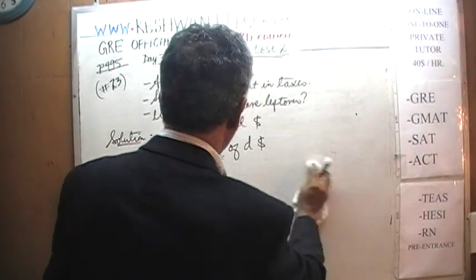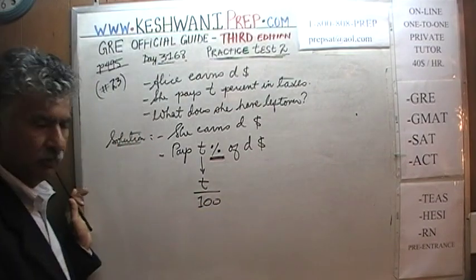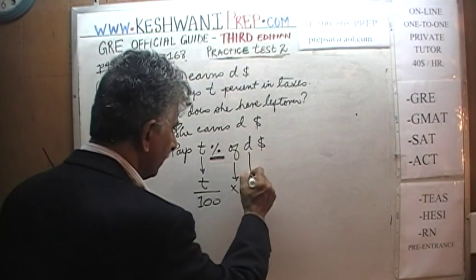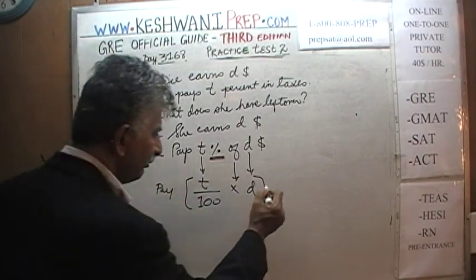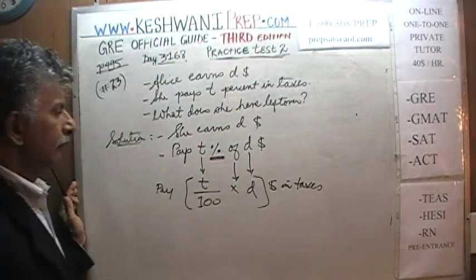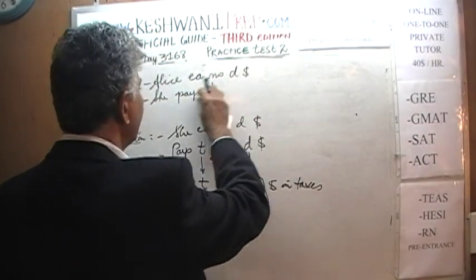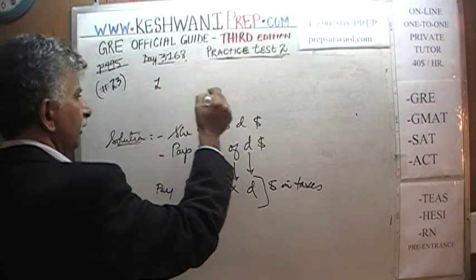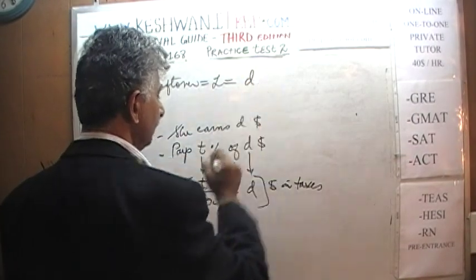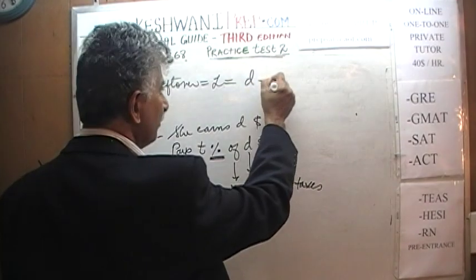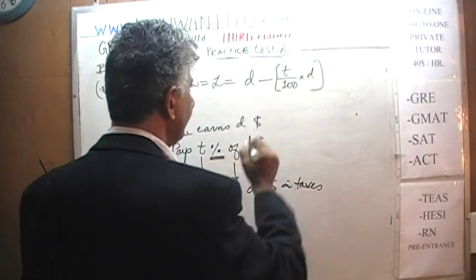Let's translate this. T percent means out of 100, so T over 100. The word of simply means times, times D. This is how much she pays in taxes: T over 100 times D. But if she pays this many dollars in taxes, we can figure out what is left over. She had D dollars to begin with. What she has left over, let's use the letter L to represent leftover. D dollars minus T over 100 times D is what she has left over.